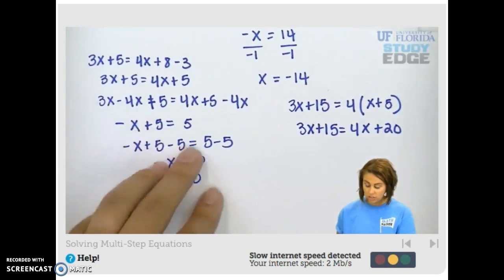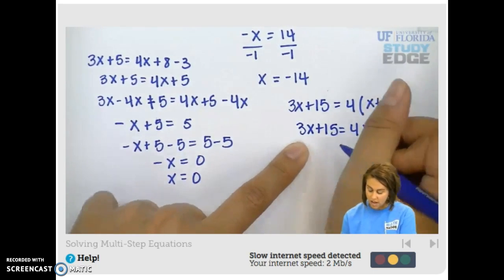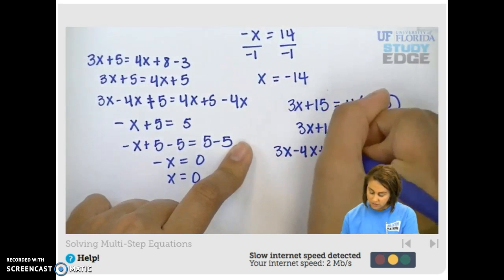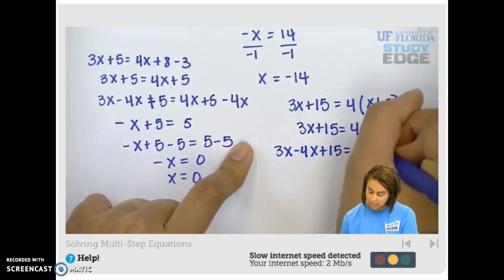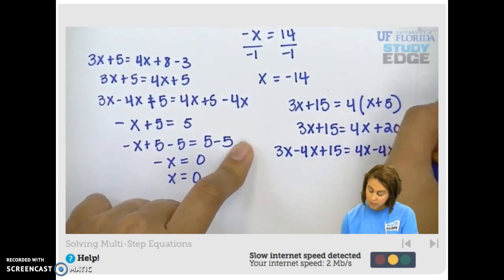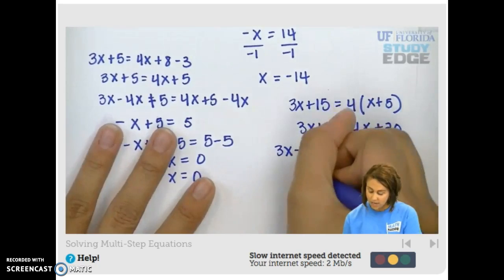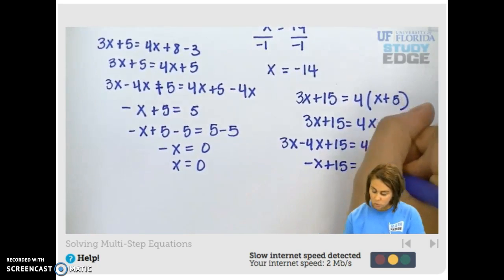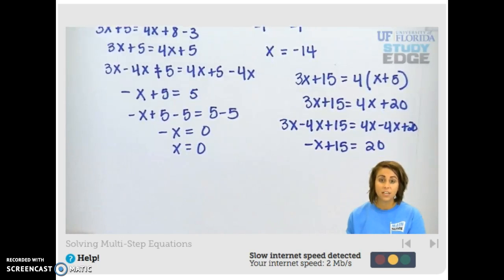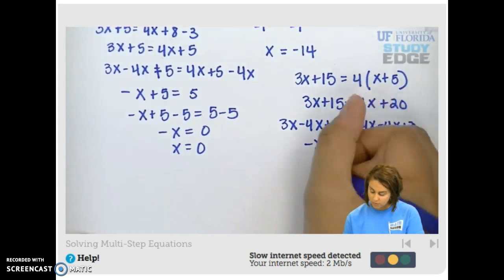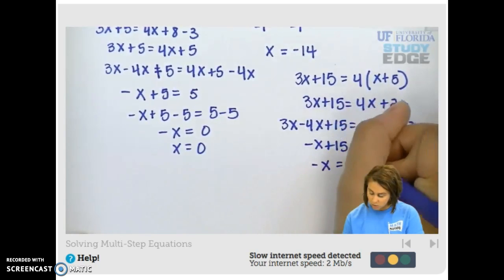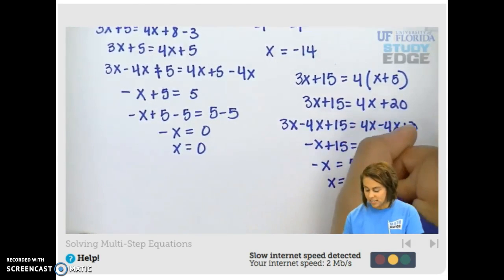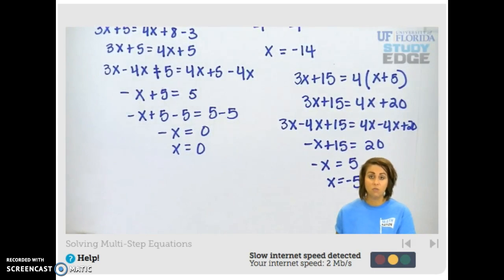That would cause you to get a solution of negative 5. We've got 3x minus 4x plus 15 equals 4x minus 4x plus 20, and we've got a negative x plus 15 on the left and a 20 on the right. When we subtract 15 from both sides, we've got x equals 5, or negative x equals 5, which is x equals negative 5, when we divide by a negative 1.